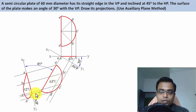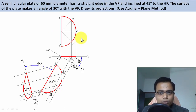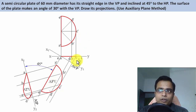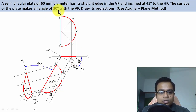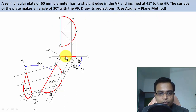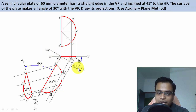I strongly suggest you check out the link where I solve the same problem using the change of position method. Remember: when you have an auxiliary inclined plane, you get the auxiliary top view; when you have an auxiliary vertical plane, you get the auxiliary front view. Here the surface was inclined with the VP, so instead of changing the position we fixed an auxiliary vertical plane — which appears as a line from the top.